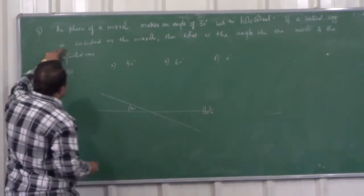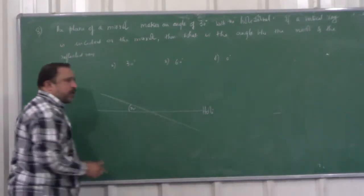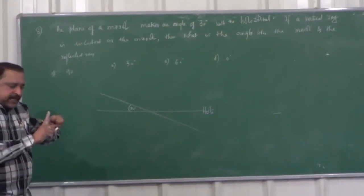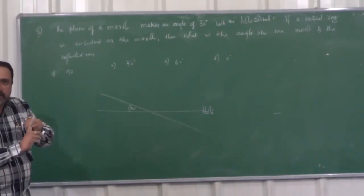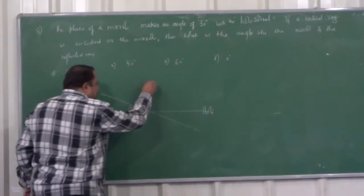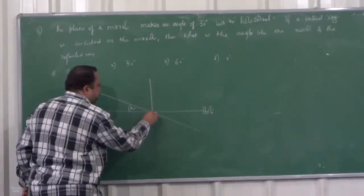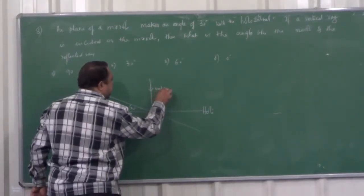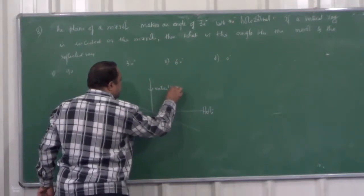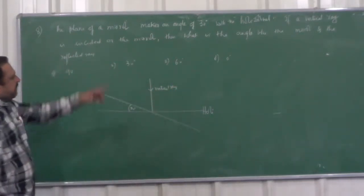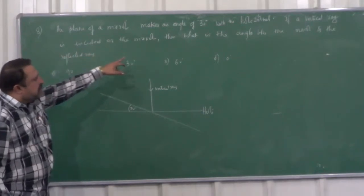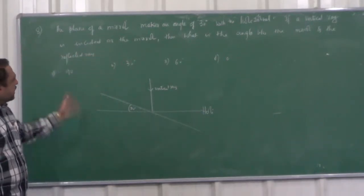Now, if a vertical ray is incident on the mirror. Vertical ray means what? Exactly perpendicular to horizontal is called as vertical. So this would be vertical. This is vertical ray. If a vertical ray is incident on the mirror, then what is the angle between the mirror and the reflected ray?